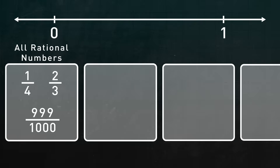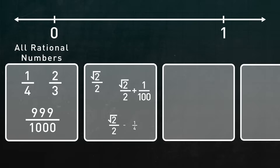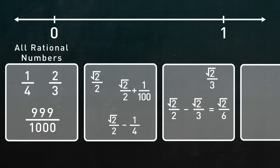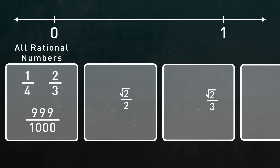We have to split the irrationals into mini bins. For example, one bin will contain the square root of 2 divided by 2 and all the numbers that differ from it by a rational, like the square root of 2 divided by 2 plus one one-hundredth, and the square root of 2 divided by 2 minus one-quarter. What about the square root of 2 divided by 3? Well, the square root of 2 divided by 2 minus the square root of 2 divided by 3 is the square root of 2 divided by 6, which is irrational.